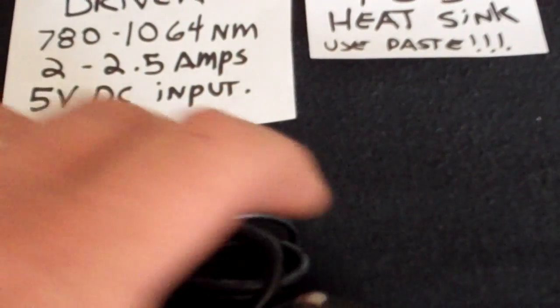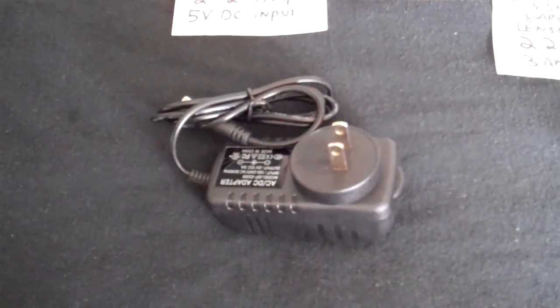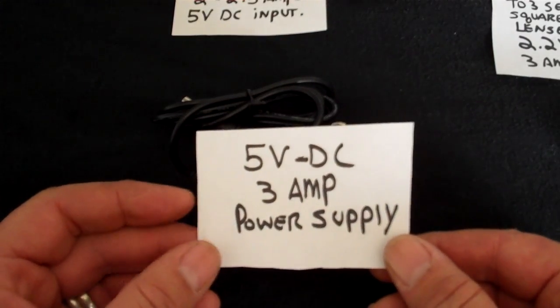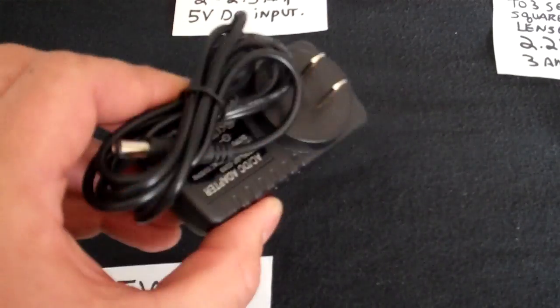Here, first is the power supply. Let me zoom out real quick. Here's the power supply for the diode driver. This power supply is a 5 volt DC 3 amp power supply. Basically, you plug it in the wall, simple.